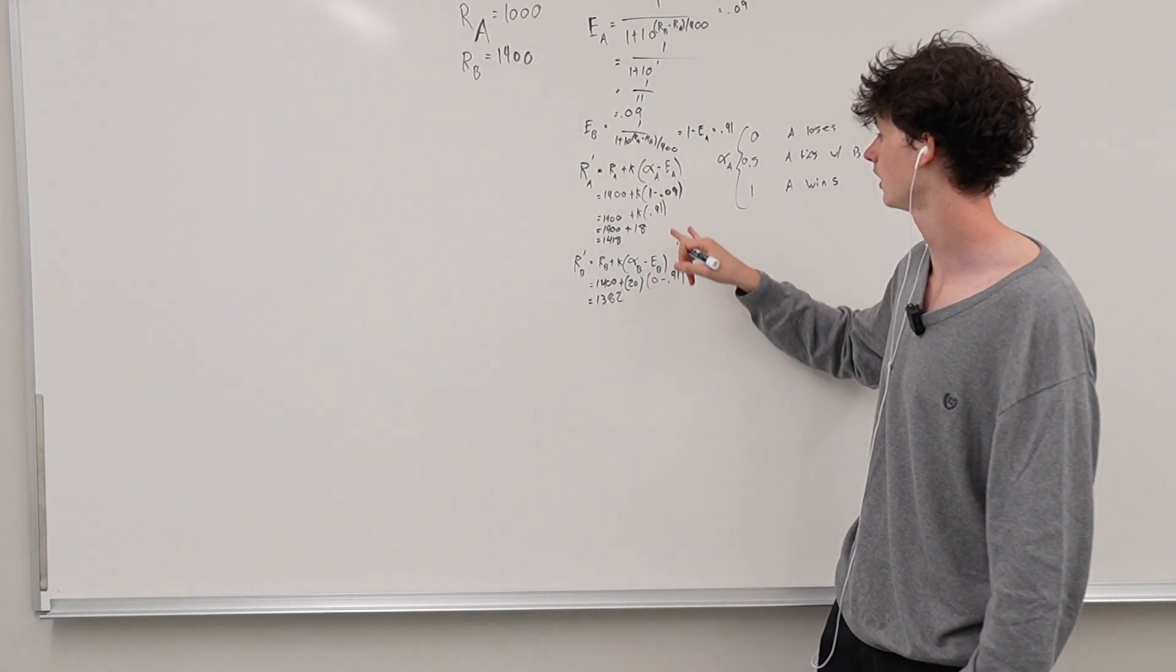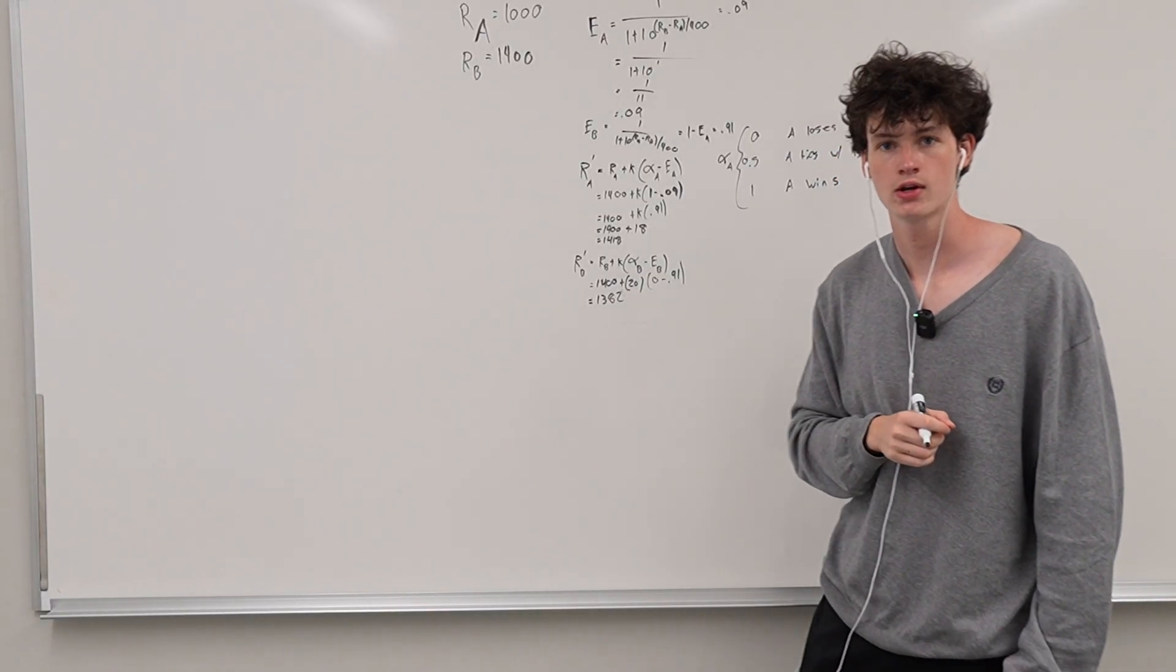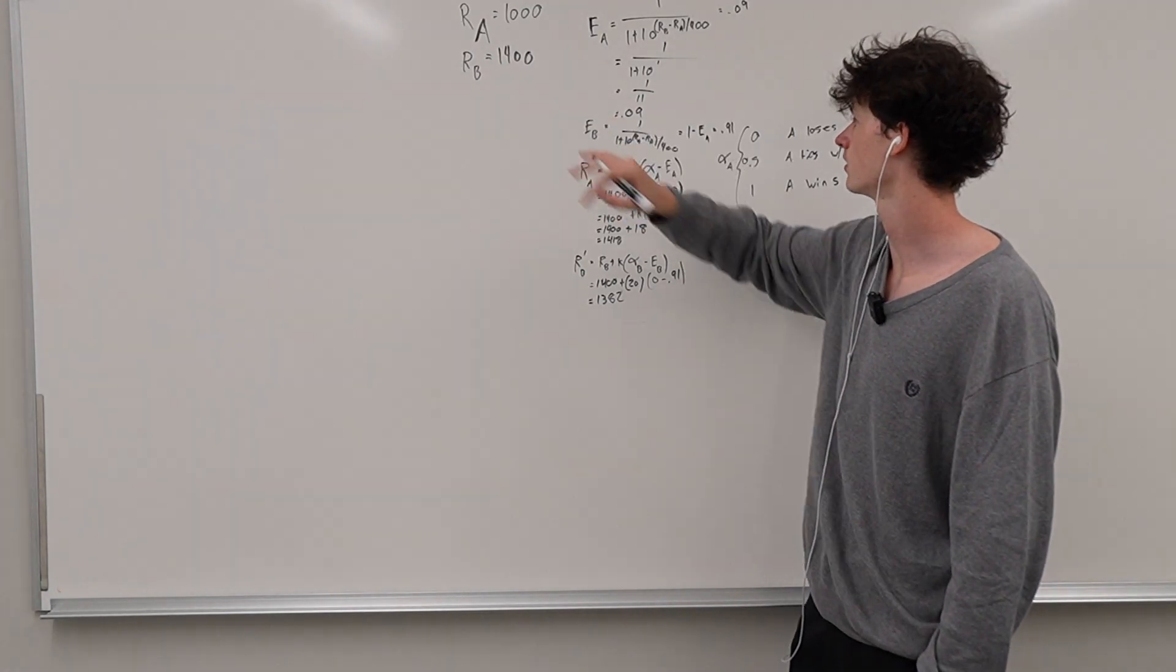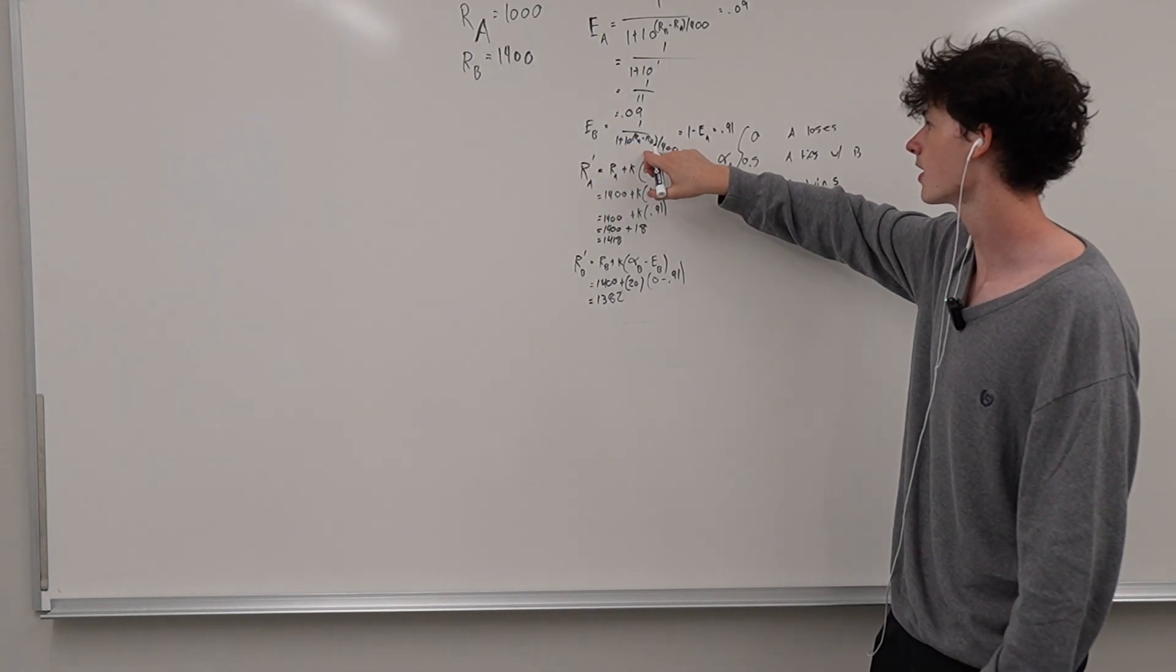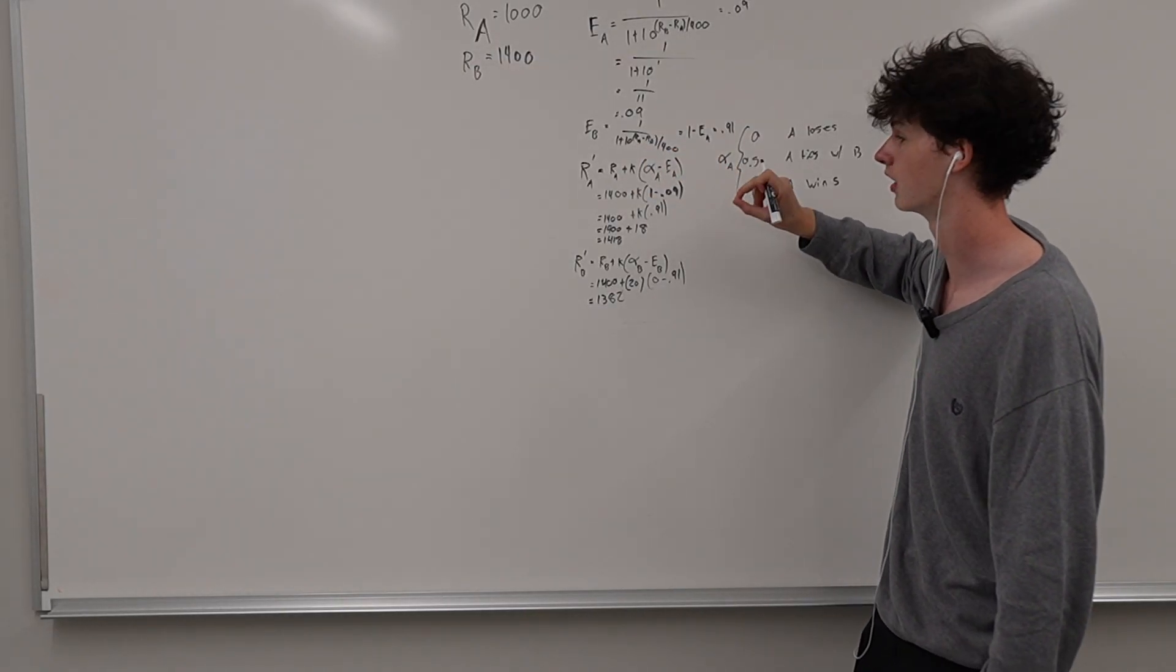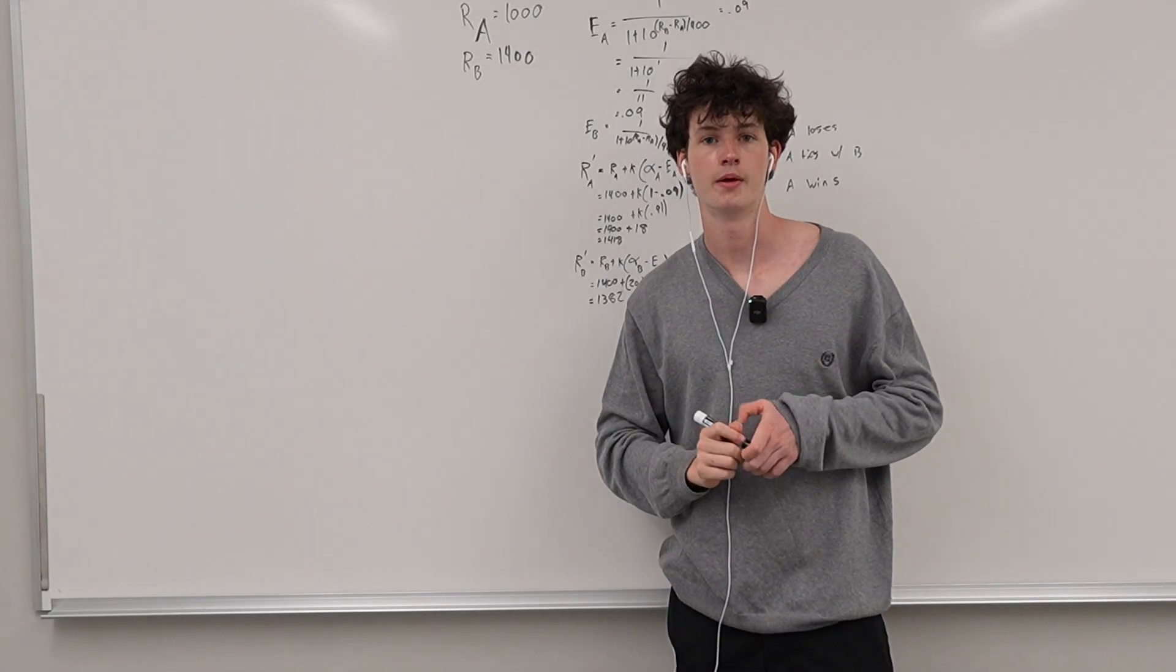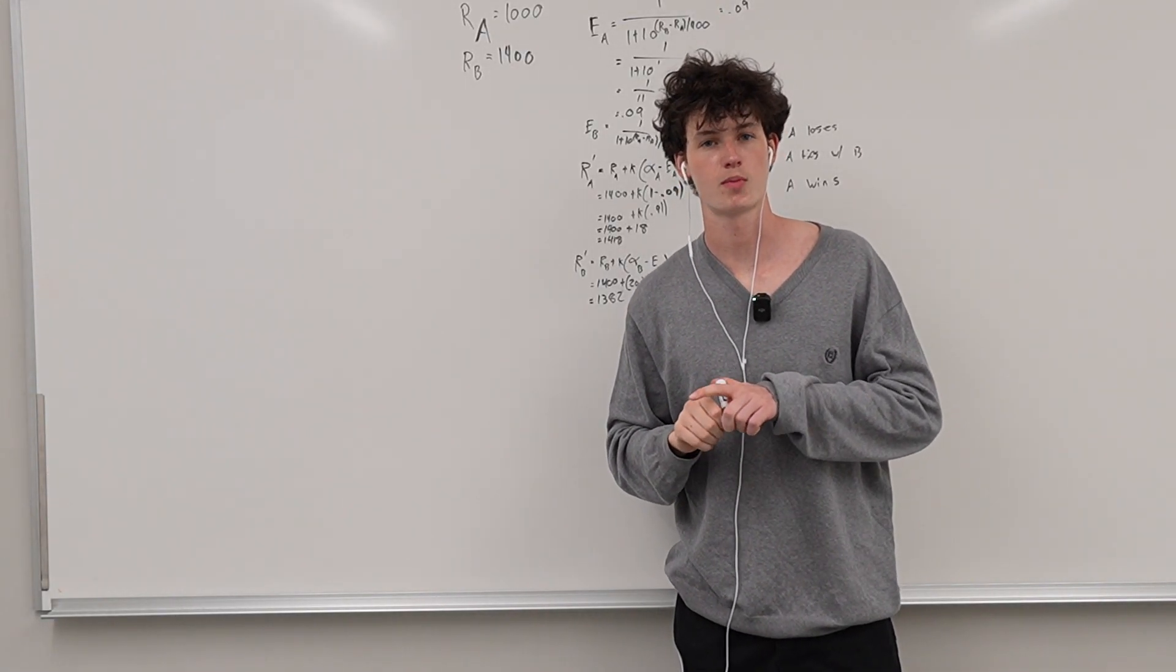So player A gained 18 and player B lost 18. However, if the disparity is a lot higher, so say player B was rated like 2000, this number right here is going to be substantially larger. And both of their ratings are going to get adjusted exponentially. So yeah. Hope you enjoyed and follow me for more math.